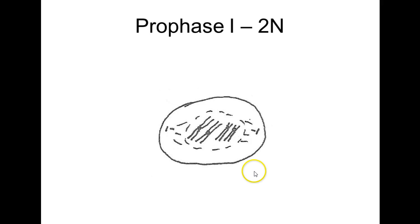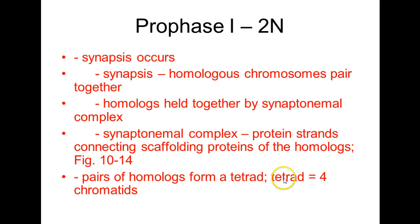During prophase I, we have an event called synapsis, where the homologous chromosomes pair together. Homologs are held together by what's called a synaptonemal complex, which consists of strands of proteins that connect the scaffolding proteins of the homologs. These pairs of homologs form what's called a tetrad — there are four chromatids, and thus it is referred to as a tetrad.